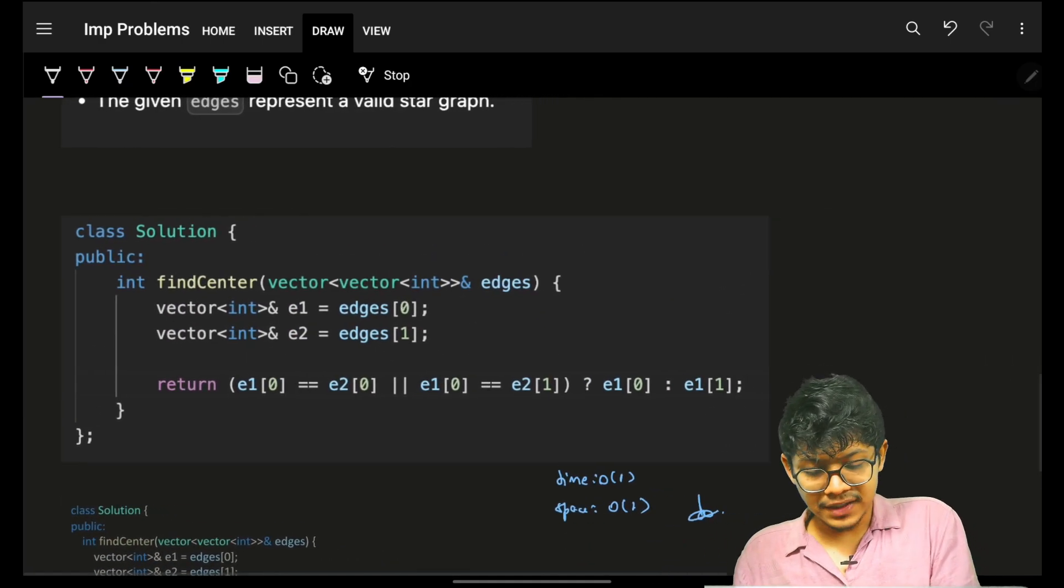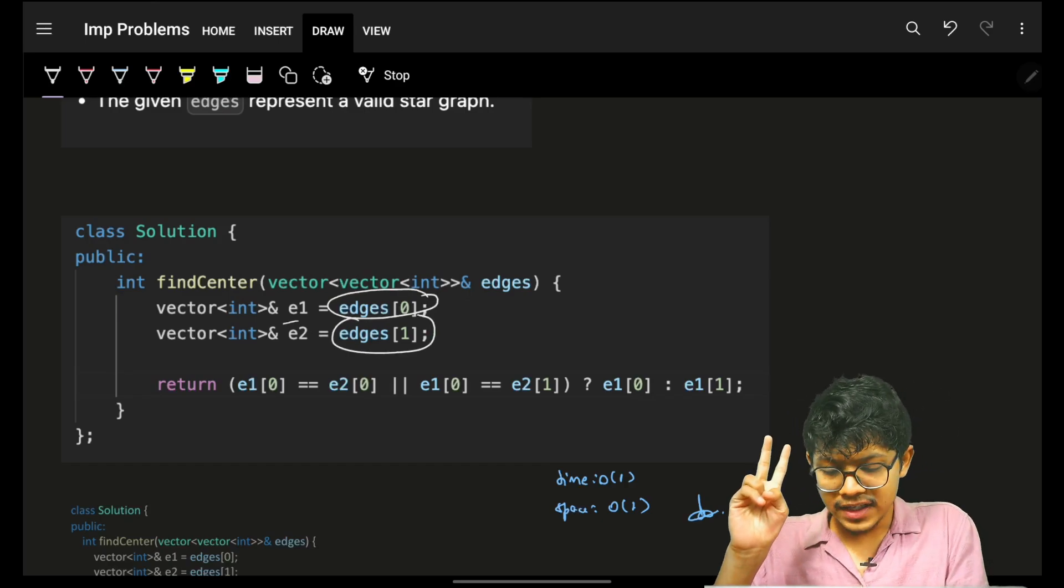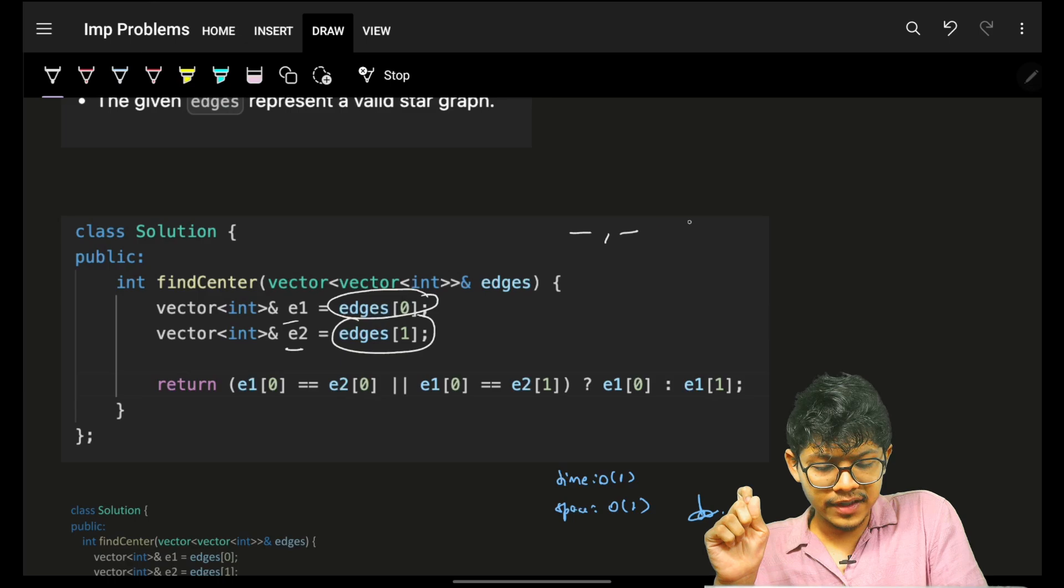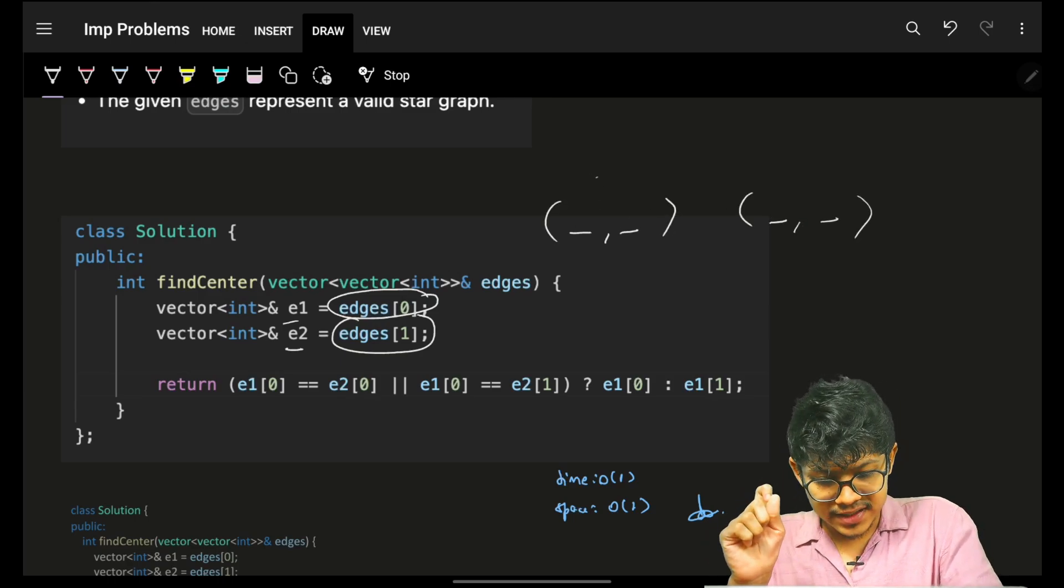It's exactly the same. Firstly, I grabbed the top two edges, e1 and e2. Then I will compare, let's say I grabbed e1, and then let's say I grabbed e2.